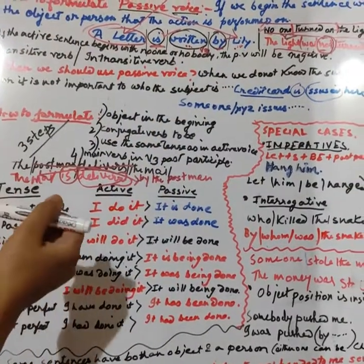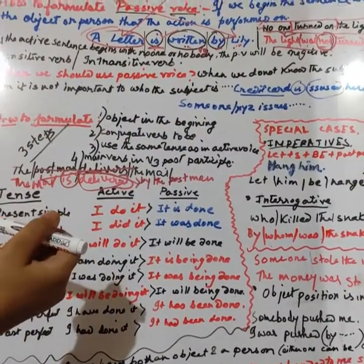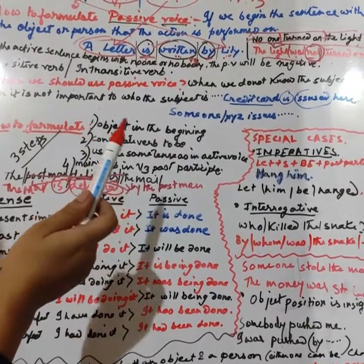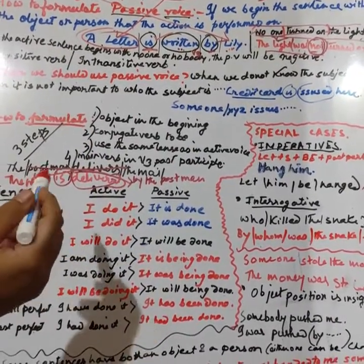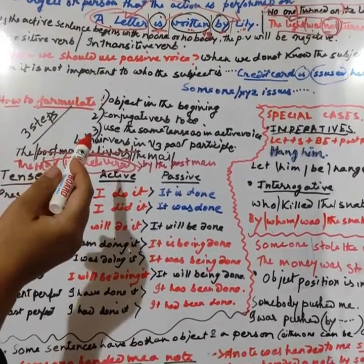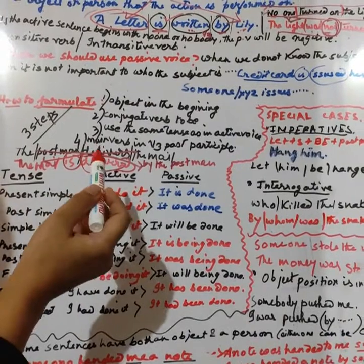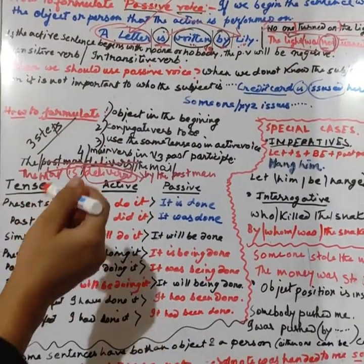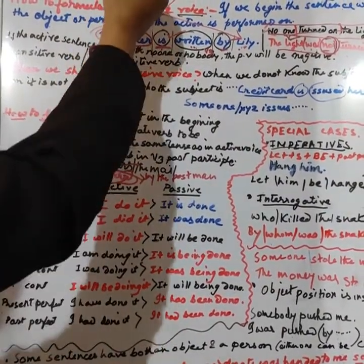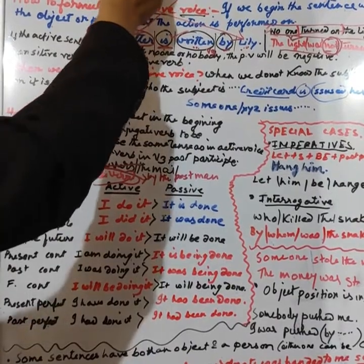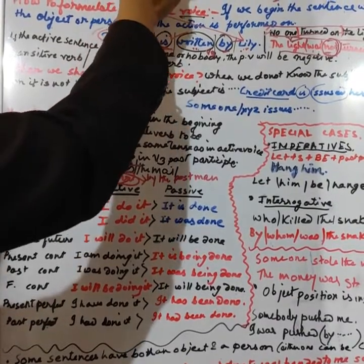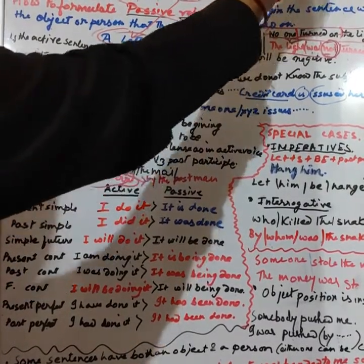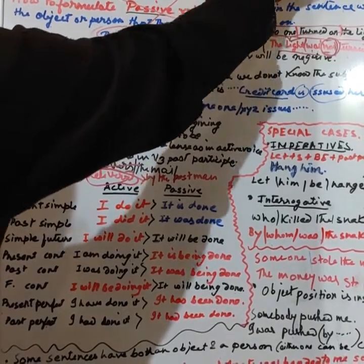Welcome students. Today we will discuss active and passive voice. What is an active voice? When can we say that a sentence is in active voice? The definition is: when the verb speaks of its subject as acting.